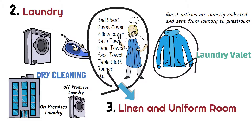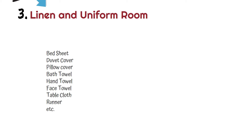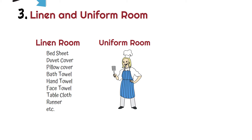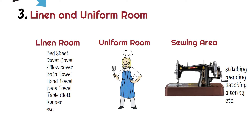All linen articles such as bed sheets, towels, pillowcases, and tablecloths are stored in the linen room. Alongside the linen room, there is a uniform room where uniforms of all hotel staff are kept and distributed. Inside the linen and uniform room, there is also a sewing area where the tailor does all work related to stitching, mending, patching, and altering. The tailor may be provided a separate cabin, room, or simply a sewing table with a cabinet.